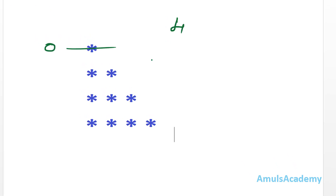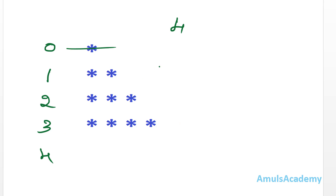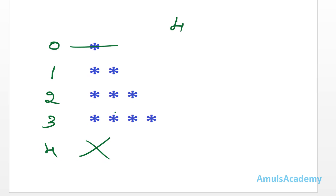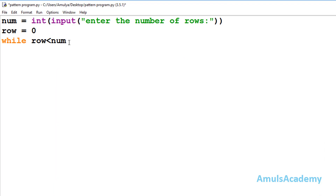For example, if the input is 4, row starts from 0. It will check 0 less than 4 — yes, true, so it prints. Then 1 less than 4 — true, prints. Then 2 less than 4 — true, prints. Then 3 less than 4 — true, prints. Finally, it checks 4 less than 4 — no, it is not, so it won't print that row. That's why we use this condition.